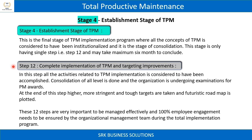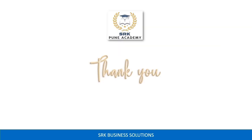At the end of this step, higher, more stringent, and tough targets are taken and a futuristic roadmap is plotted. These 12 steps are very important to be managed effectively, and 100% employee engagement needs to be ensured by the organizational management team during the total implementation process.